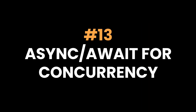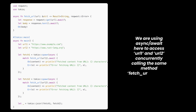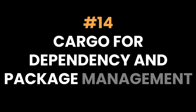Thirteen: async/await for concurrency. Rust's async/await syntax brings async programming to the language, enabling non-blocking tasks without the heavy overhead of threads. This feature is especially useful for web servers and high-performance I/O operations.